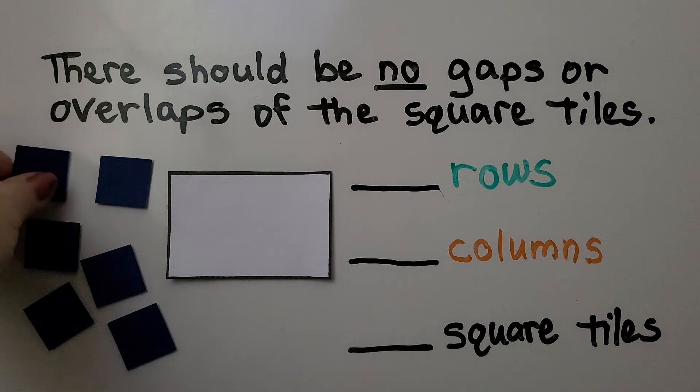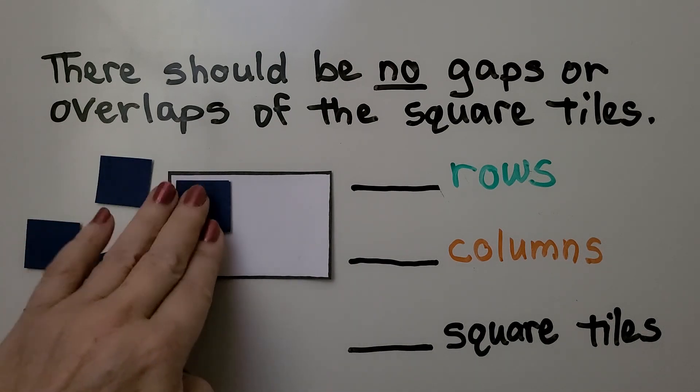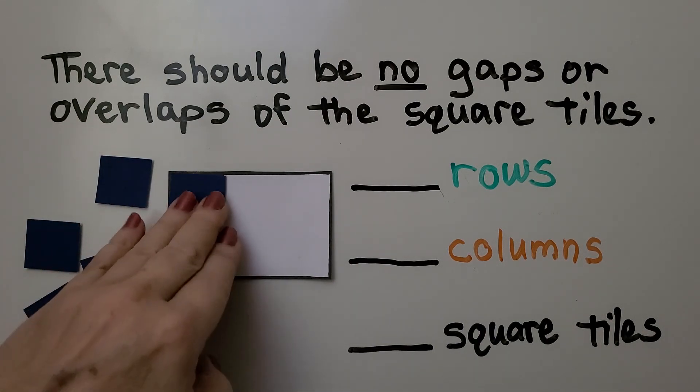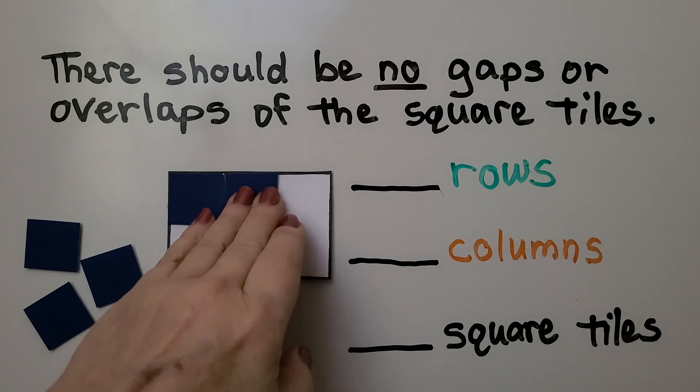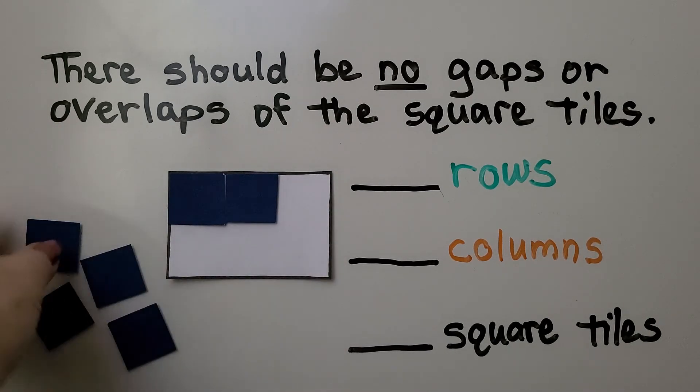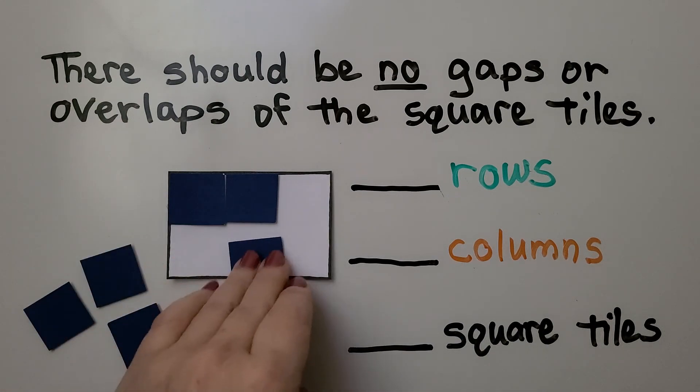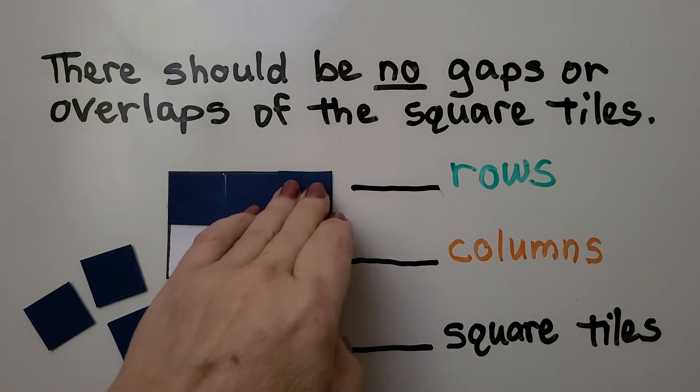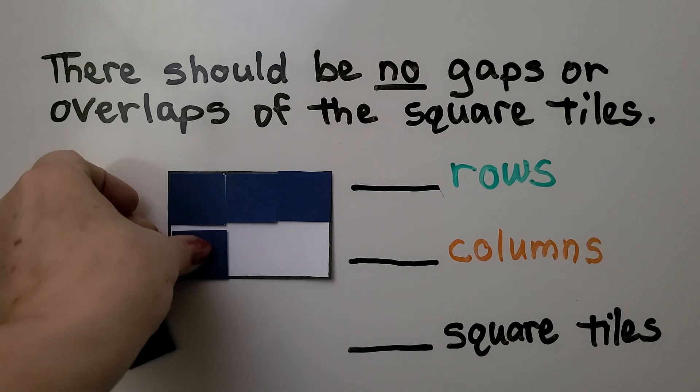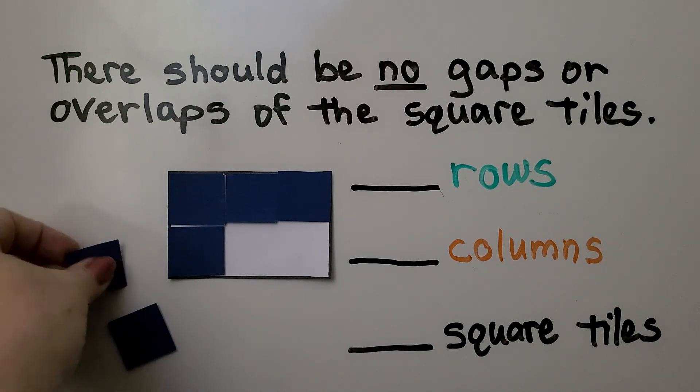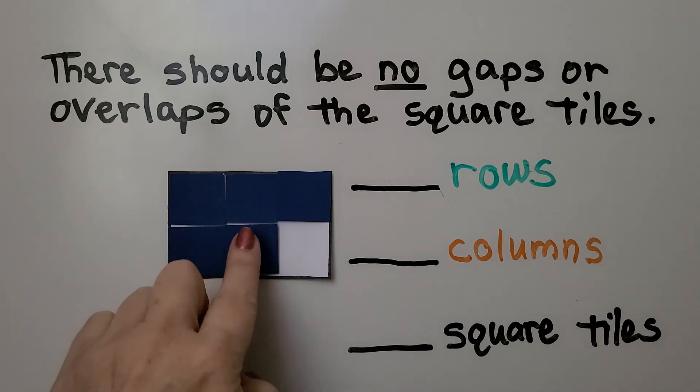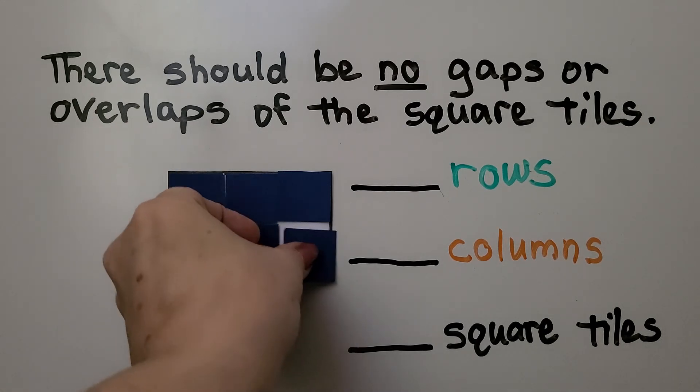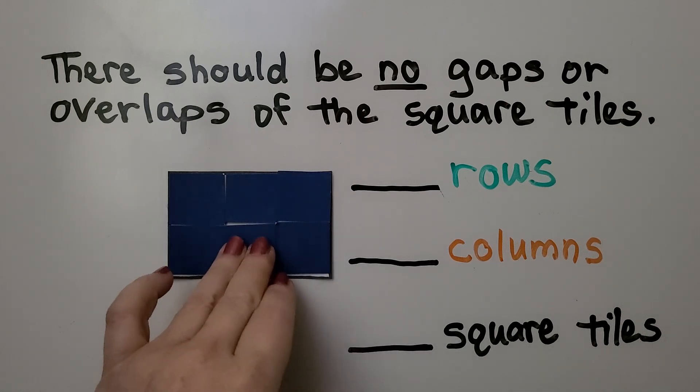We take a square tile and put it into the corner very carefully. Take another one. That's 2. That's 3. That's 4. Be very careful. That's 5. We can fit one more. That's 6.